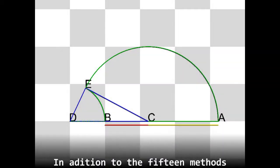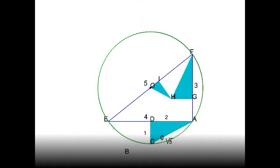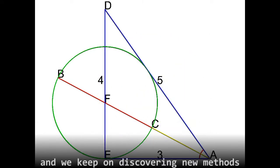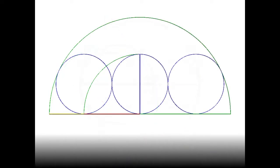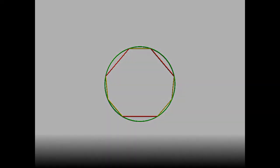In addition to the fifteen methods that we have seen in these three chapters, there are several more, and we keep on discovering new methods. It's the magic of number five.